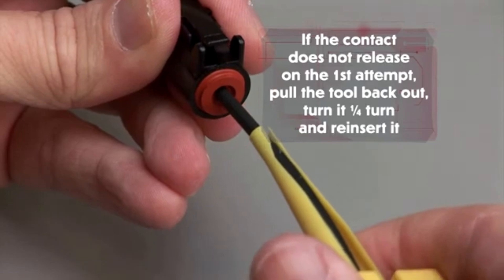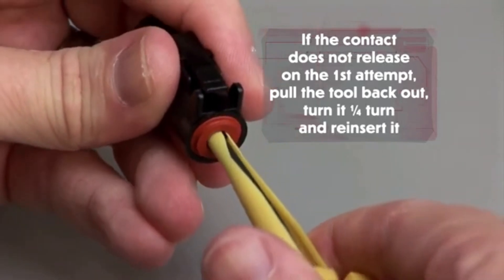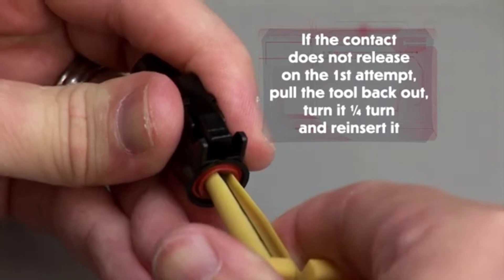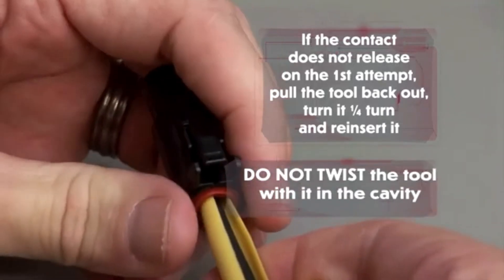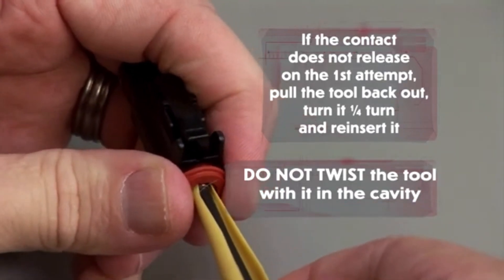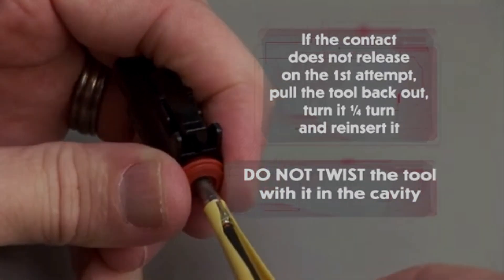If the contact does not release on the first attempt, pull the tool back out, turn it one quarter turn and reinsert it. Do not twist the tool with it in the cavity. Pull the contact and wire assembly out of the connector.